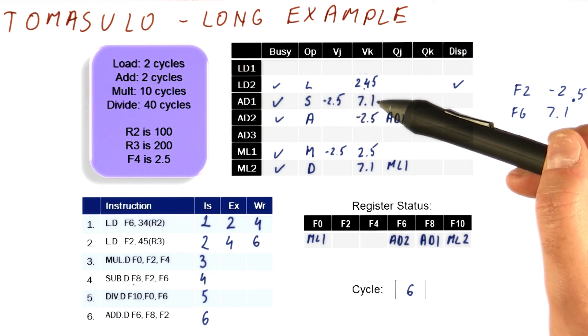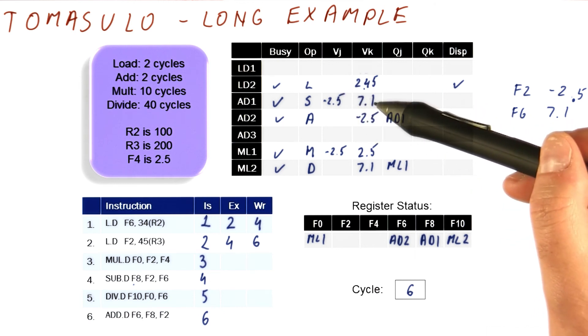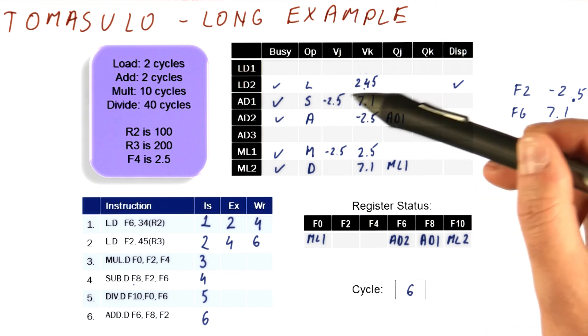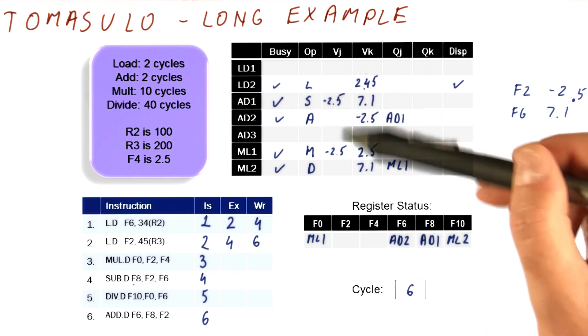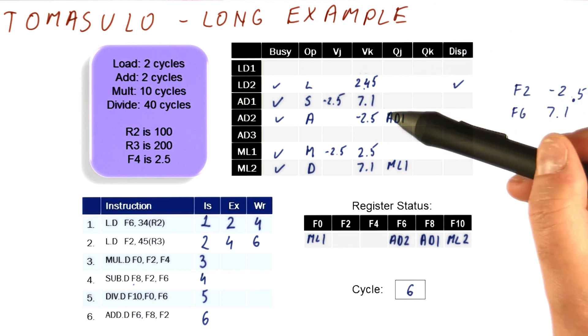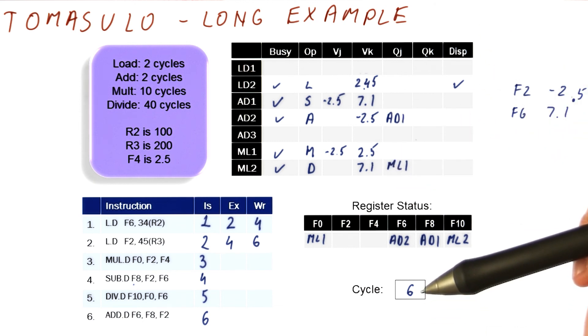It's easier if we then first try to dispatch instructions, and then broadcast the result. Because if we now consider what can dispatch, this looks like it can dispatch. So we need to remember that the broadcast has happened in the same cycle, and this really is not eligible for dispatch yet. So that's why we did kind of dispatch before broadcast.